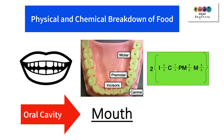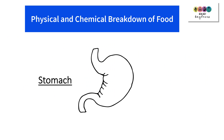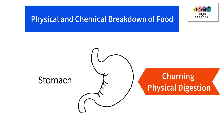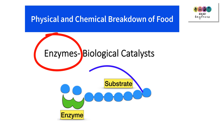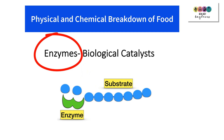Physical digestion also takes place in your stomach, whose walls are muscular, allowing them to squeeze and churn the food. The food spends many hours in the stomach and this churning action aids physical digestion. Chemical digestion is all about the action of enzymes — biological catalysts that speed up the breakdown of substrate molecules into smaller molecules without being changed or used up in the reaction. Enzymes are hugely important in chemical digestion.